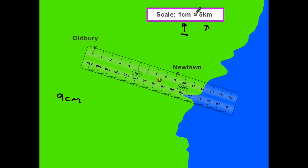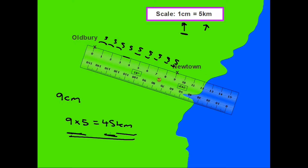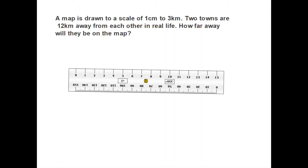Going back to the scale, every centimeter is five kilometers, so we have nine centimeters times five equals 45 kilometers. So we know that Oldbury and Newtown are 45 kilometers apart. Another way to think about it: every centimeter on the ruler is five kilometers, so from each centimeter mark you add another five. Going all the way between the two towns — one, two, three, four, five, six, seven, eight, nine fives — nine times five equals 45 kilometers.